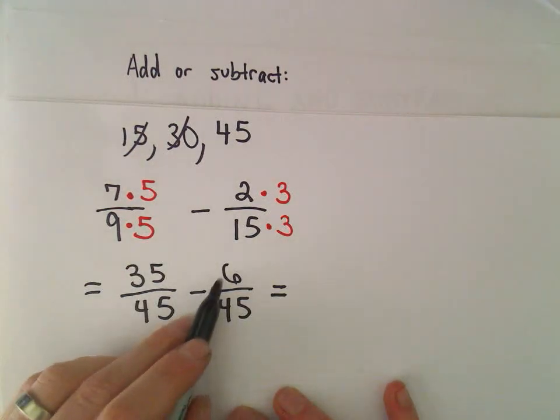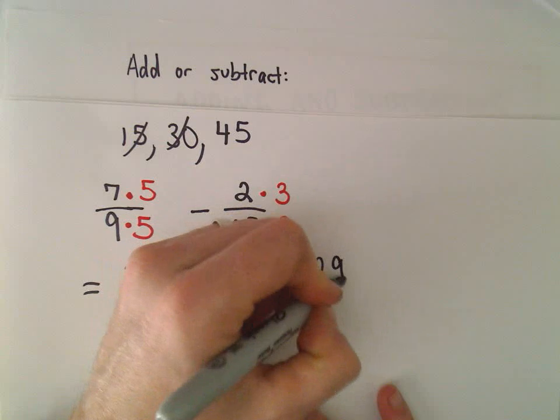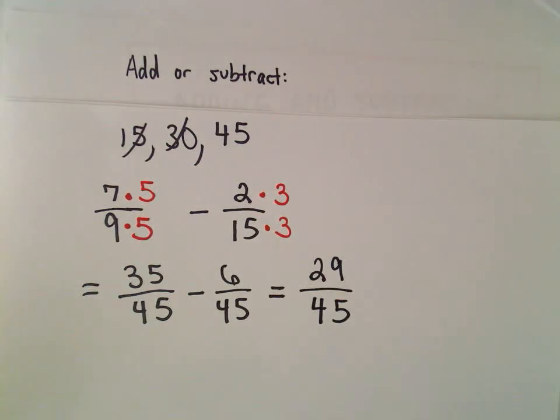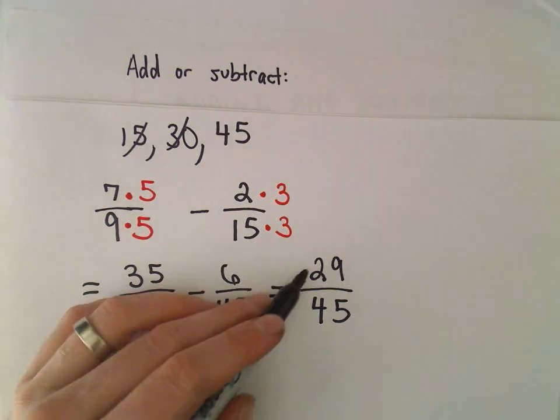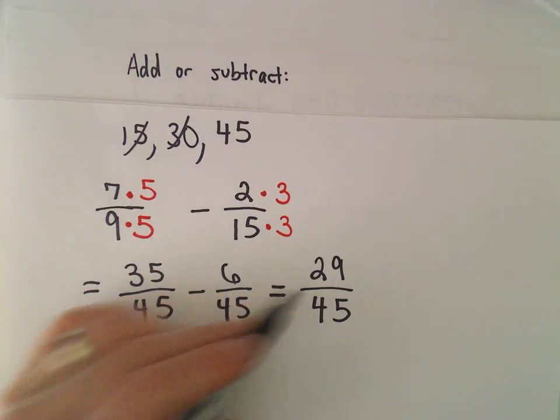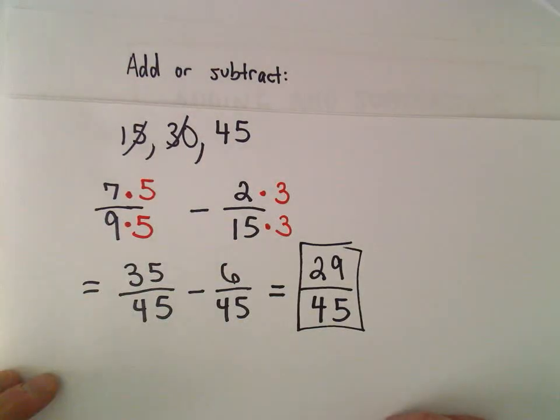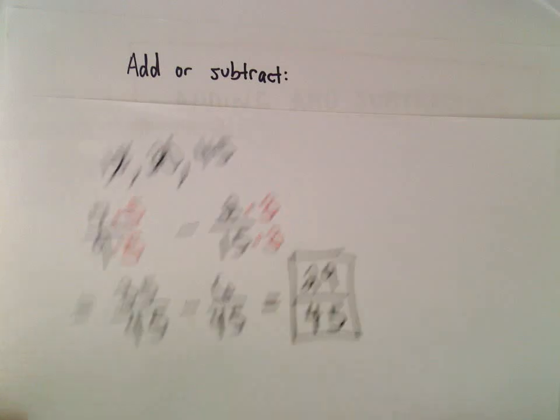Well, we can subtract. 35 minus 6 is going to give us 29 over 45. I always think, does this reduce? Well, I think 29 is actually a prime number. So no way we can factor and cancel and reduce this fraction. So there's our solution.